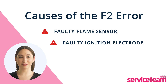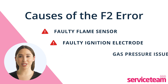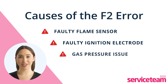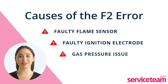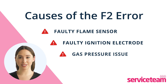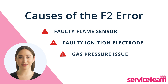Sometimes the F2 fault code may signal issues with gas pressure or supply. Low gas pressure can be caused by regulator settings, leaks, blockages in the gas line, interruptions in the gas supply like power outages, or a malfunctioning gas valve, preventing fuel combustion.